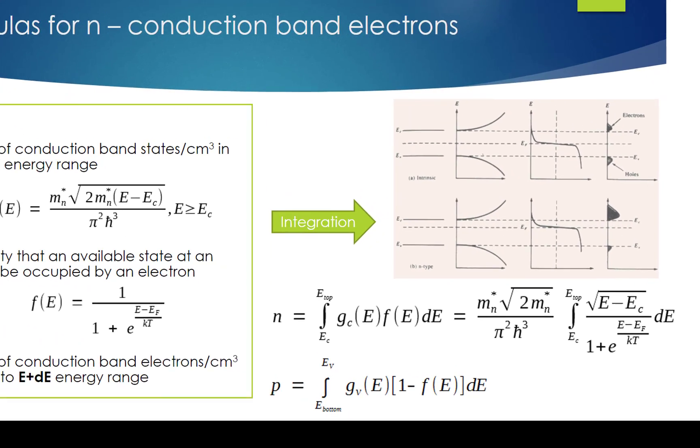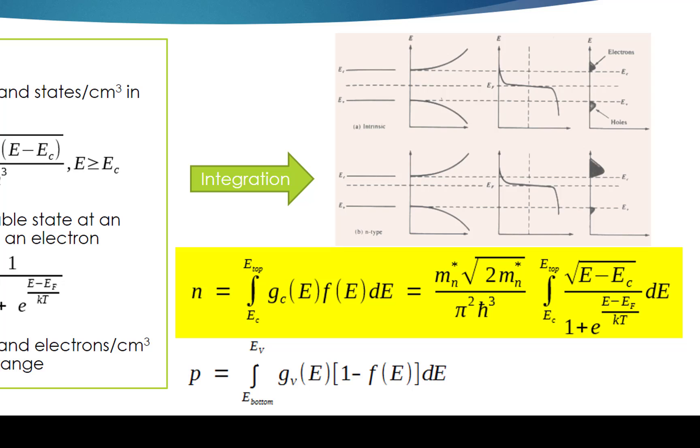We can integrate G_C(E)f(E)dE over all conduction band energies to get the total number of electrons in the conduction band per cubic centimeter. In other words, integration over the equilibrium distribution of electrons in the conduction band yields the equilibrium electron concentration n. A similar process can be made to yield the equilibrium hole concentration p in the valence band.